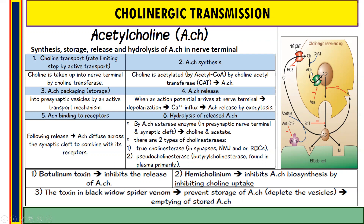Next, acetylcholine is transported into the presynaptic vesicle by an active transport mechanism. Vesamicol is a drug which inhibits this transport mechanism. This is how acetylcholine gets transported and stored into the synaptic vesicle — this is the third step.